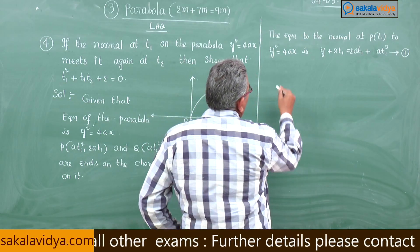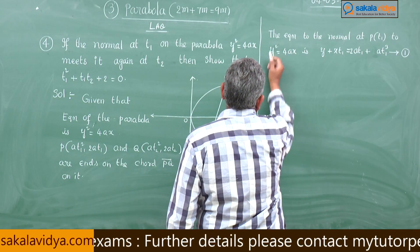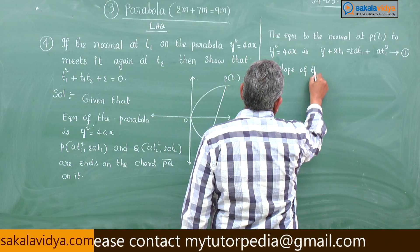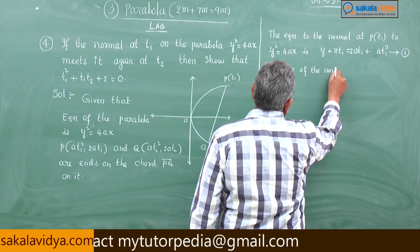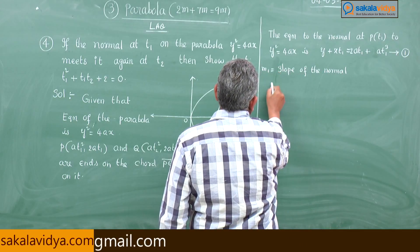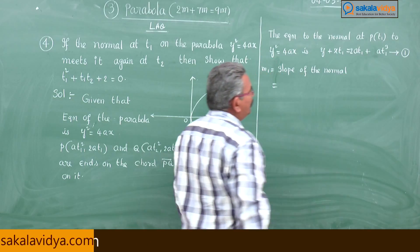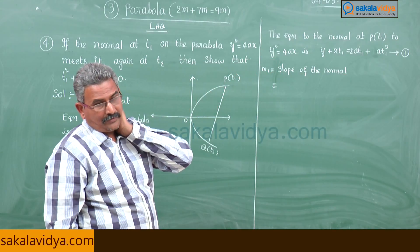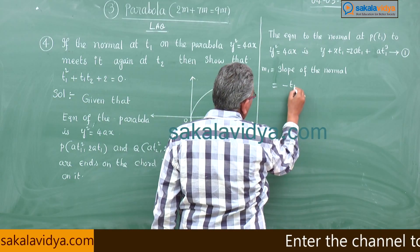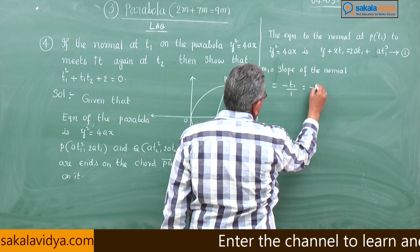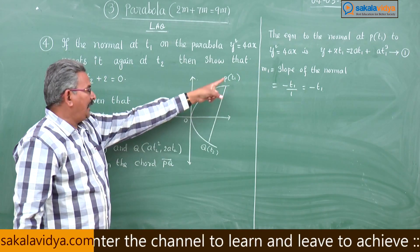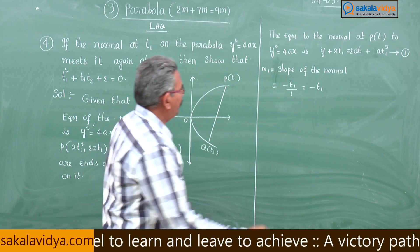Now, slope of the normal, say m1, slope of this line is minus the x coefficient by y coefficient. So minus t1 by 1, that is minus t1. Normal and chord represent the same, that means